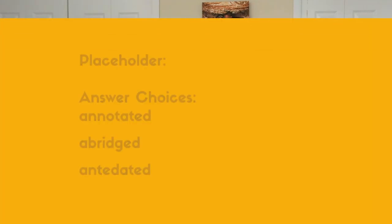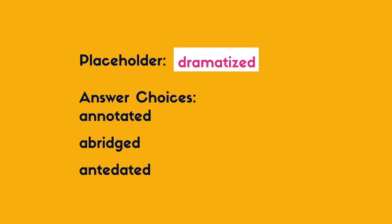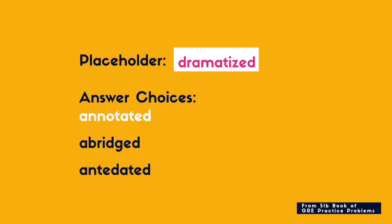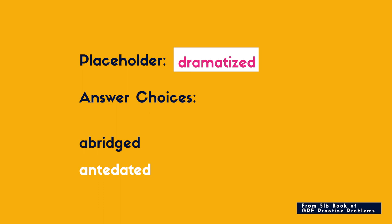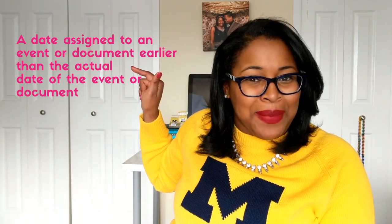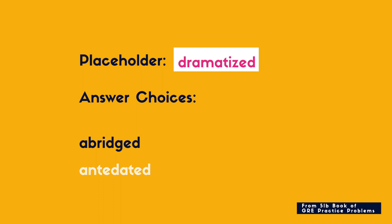Now that we have our placeholders — 'dramatized' and 'primary' — let's look at the answer choices. For blank number one, we've got: annotated, abridged, and antedated. For 'annotated,' I know that means having a whole bunch of notes on it, and I don't think that's something that would annoy scholars, so I'm crossing that off. Next is 'abridged' — that means shortened. Even though it doesn't completely match 'dramatized,' it actually makes a lot of sense: dramatized versions are shortened versions that leave out certain details. Then 'antedated' — 'ante' is like 'before' and 'dated' sounds like dated. It didn't look like it matched based on how the word was structured. So I went with 'abridged' because it best matched my placeholder.